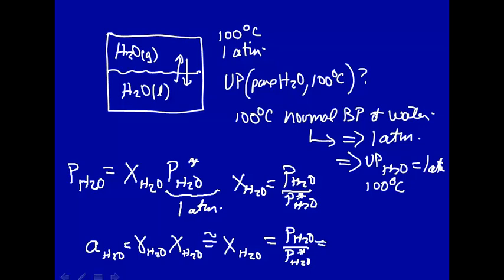The vapor pressure given in the problem is 748.2 mmHg. The vapor pressure of pure water at 100 degrees, that's when it's boiling, is 760 mmHg. So that the activity of water in that solution is 0.9845.